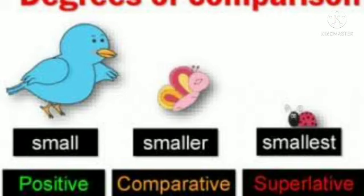Now the bird is small. The butterfly is smaller than the bird, and the insect is the smallest. In this way we compare the noun.